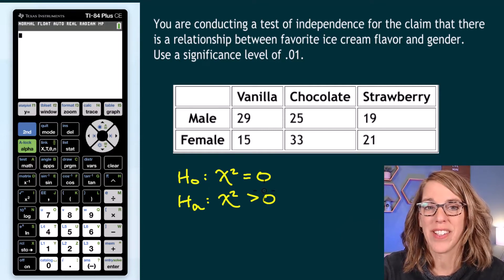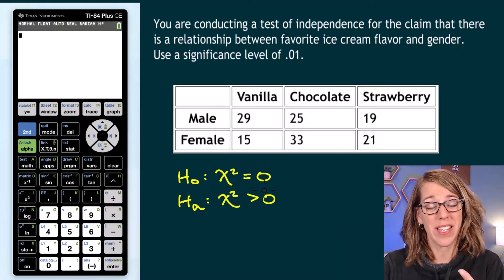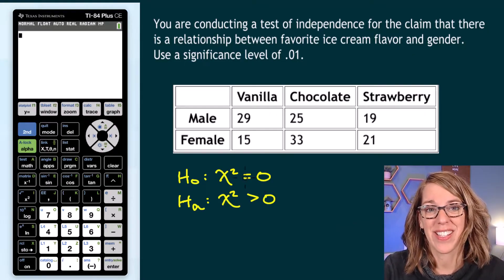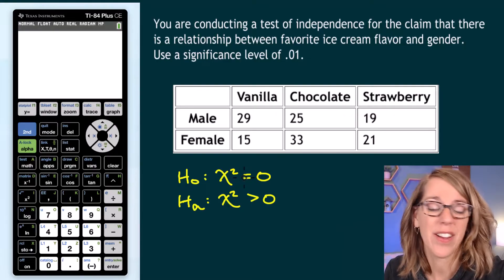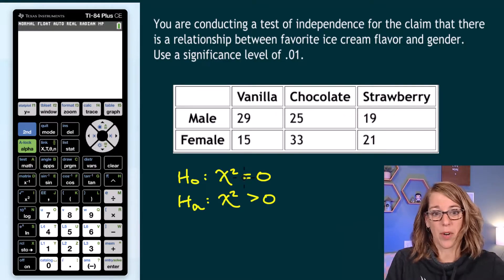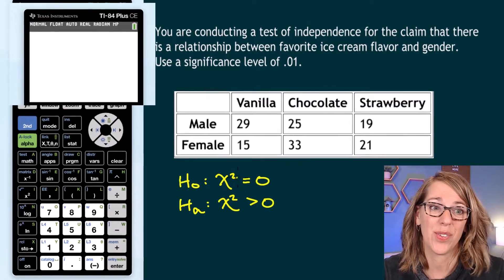We're going to do a chi-square test of independence with the TI-84. It is so easy to find the test value, the p-value, and even the expected values. So I've got our contingency table here. We are going to start with these hypotheses, but what I really want to do is to put my data into the calculator.